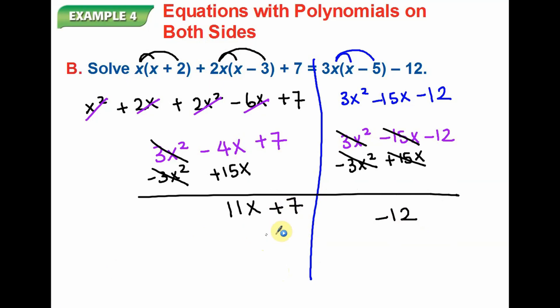So if I want to get rid of positive 7, I will subtract 7 on both sides. Now these two will be gone. All I get is just 11X. Negative 12 minus 7 will become negative 19. And X will become negative 19 over 11.